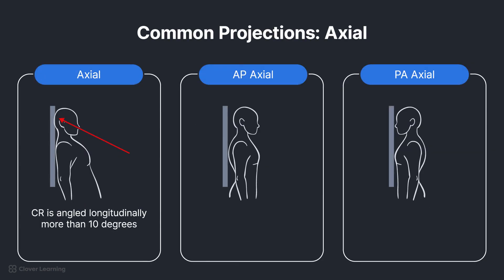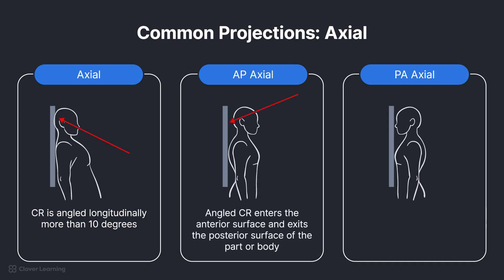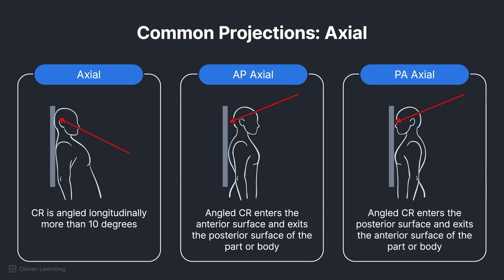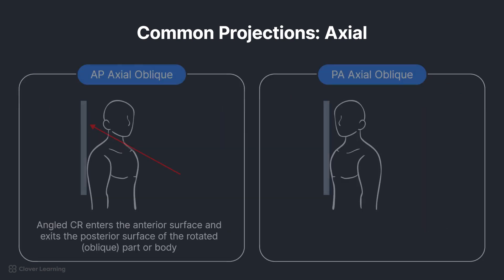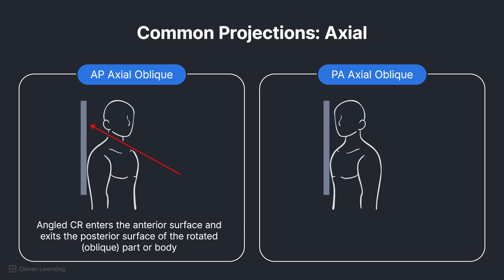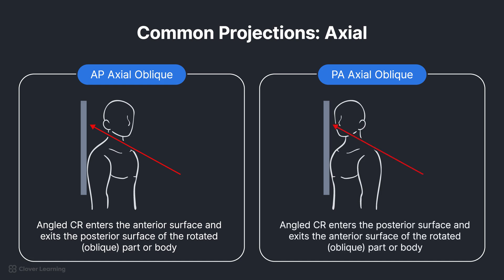Axial: CR is angled longitudinally more than 10 degrees. In rare instances, the body part may be angled instead of the CR. AP Axial: Angled CR enters the anterior surface and exits the posterior surface of the part or body. PA Axial: Angled CR enters the posterior surface and exits the anterior surface of the part or body. AP Axial Oblique: Angled CR enters the anterior surface and exits the posterior surface of the rotated or oblique part or body. PA Axial Oblique: Angled CR enters the posterior surface and exits the anterior surface of the rotated or oblique part or body.